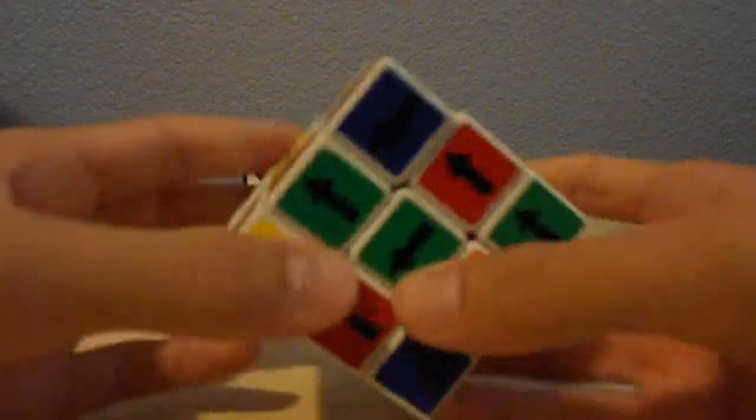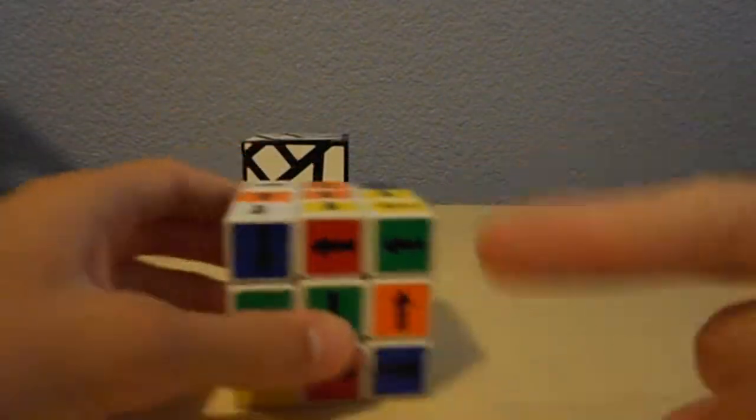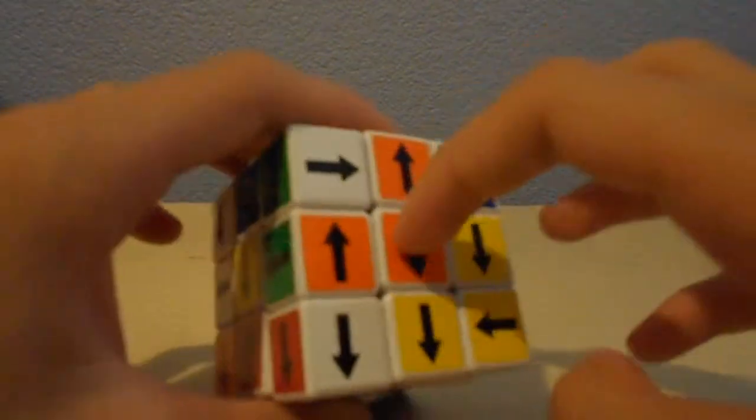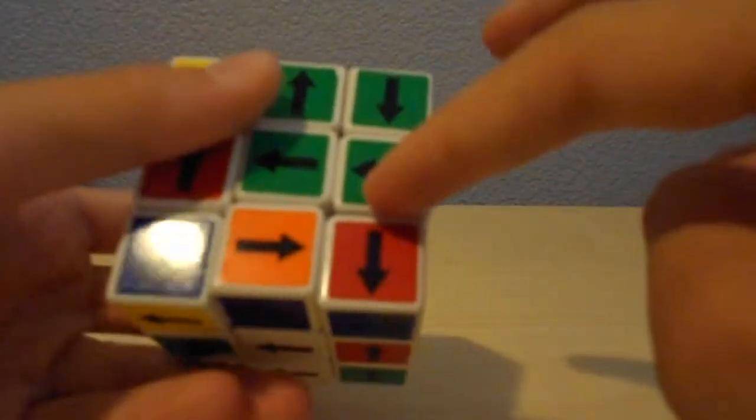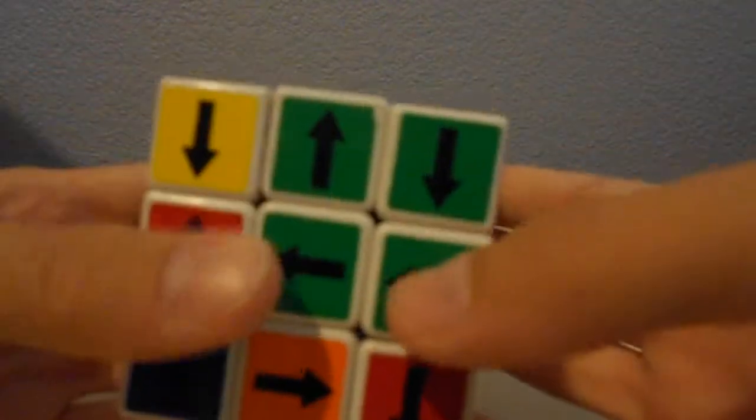The first thing we're going to do is we're going to be making the cross. This is step 1 of the beginner's method, and we are going to be making sure the centers are correct with it. So it'll solve 5 of the centers. What we're going to want to do is we want to pair up one like this, and make sure the arrow is the right way.